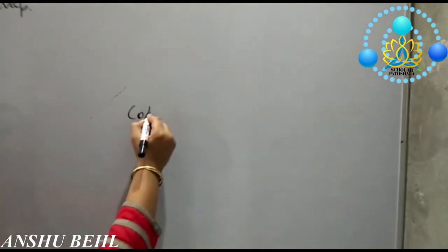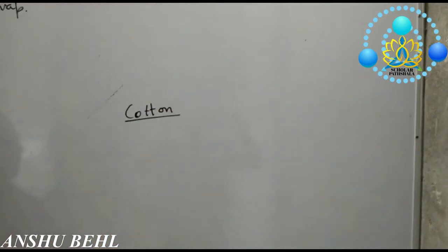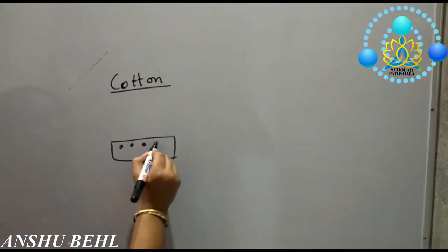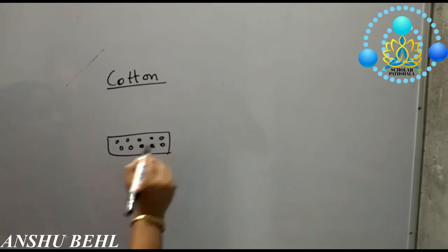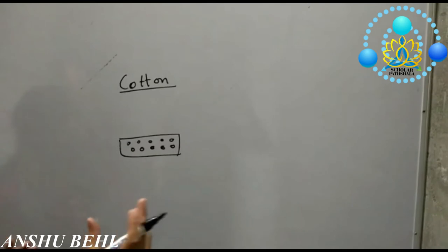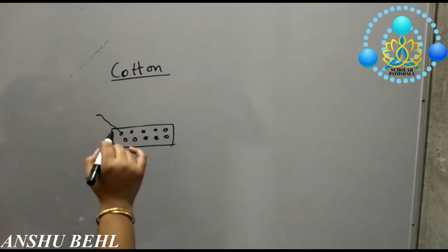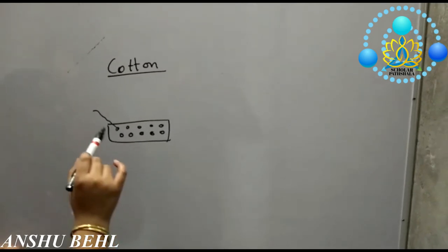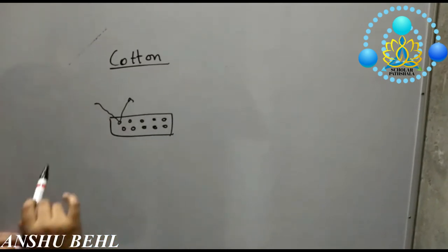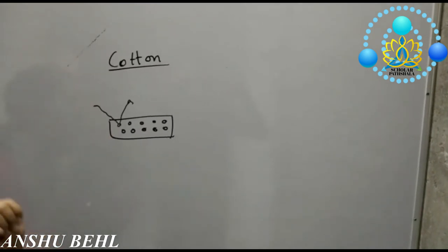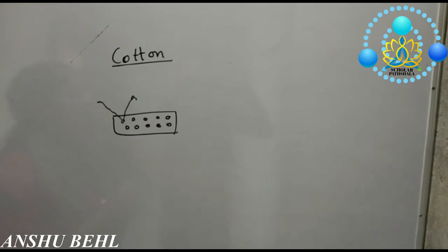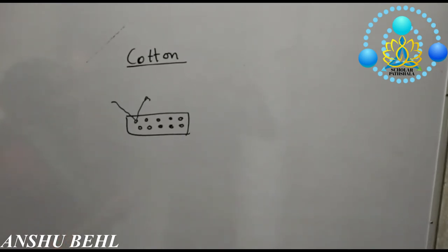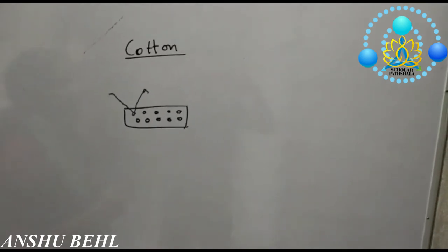We prefer to wear cotton clothes in summer rather than synthetic or silken clothes. Cotton clothes have small pores in them. In summer we sweat more, and for comfort that sweat needs to evaporate. Cotton's pores allow air to get in and take away the sweat, and as the sweat evaporates you feel cool. Similarly, when you come out after a bath and sit in front of a fan or cooler, you feel cold because the water molecules on the surface of your body evaporate, taking heat away.